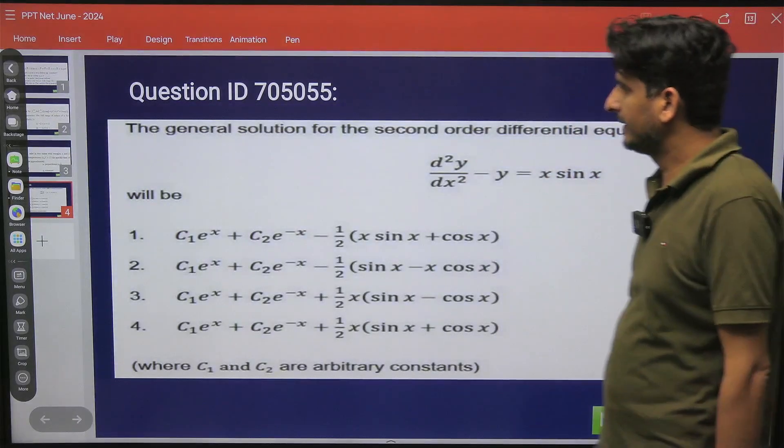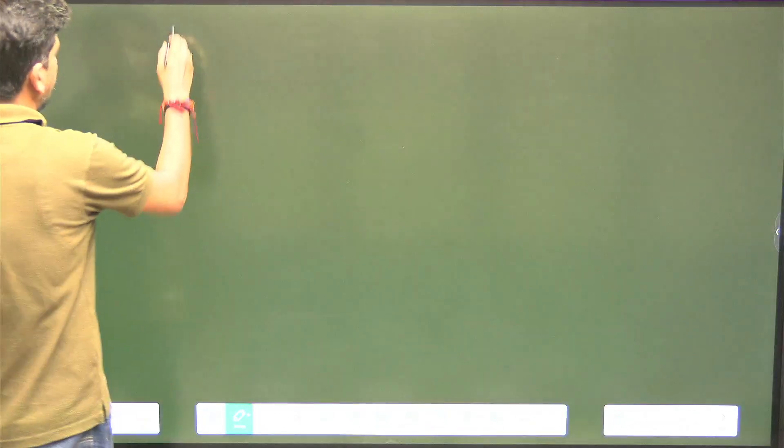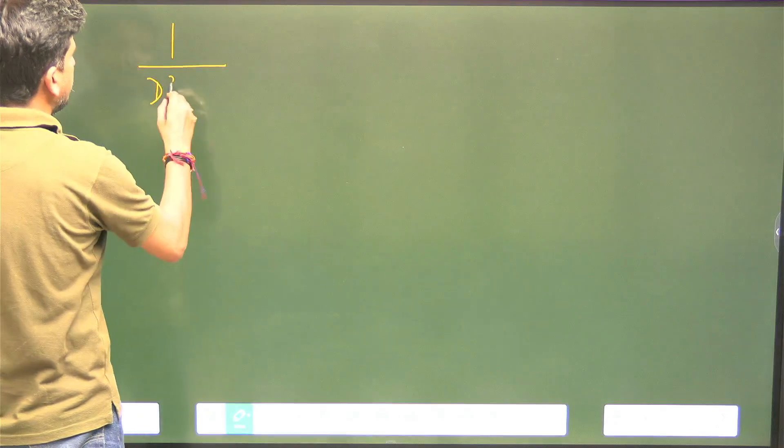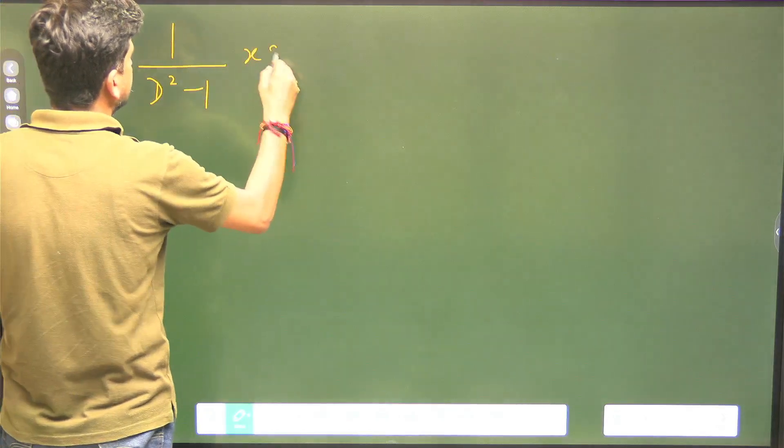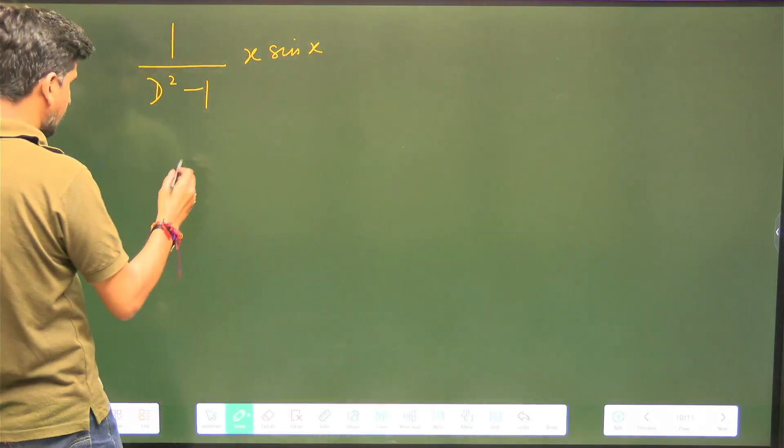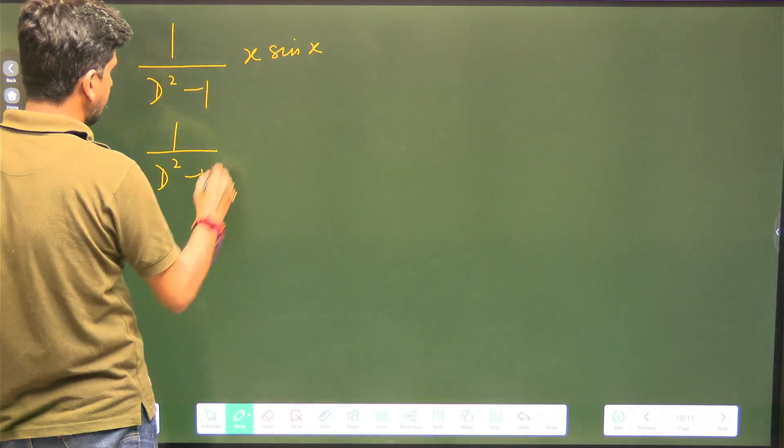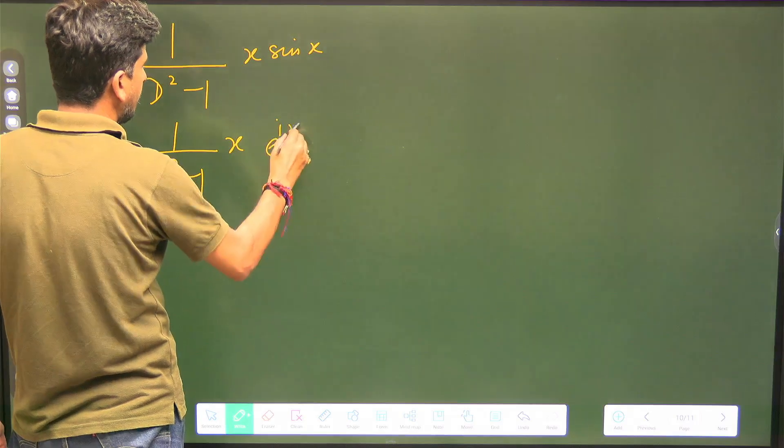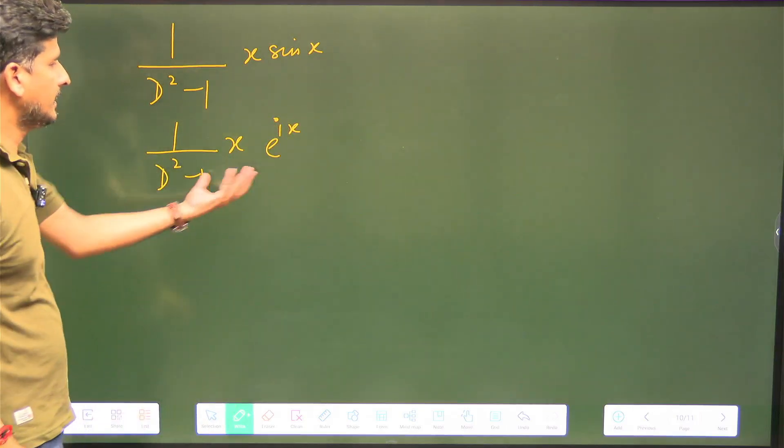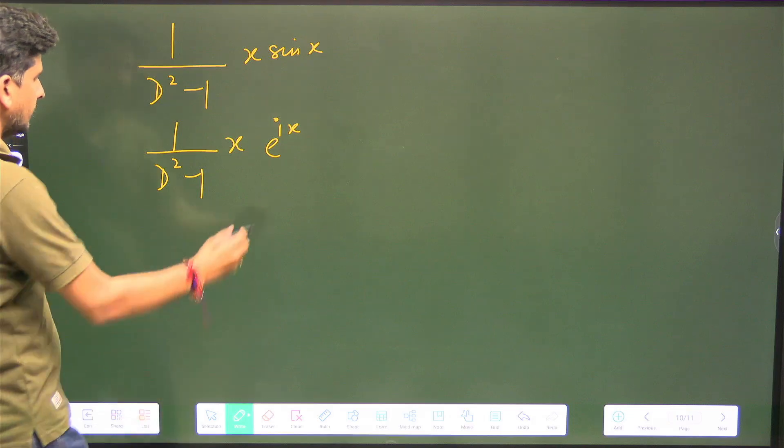And that we can do by straightforward method: 1/(d² - 1) × x sin x. This much we have to calculate. So immediately what you can do is write 1/(d² - 1) × x e^(iota x), and the imaginary part of this will give you the result.